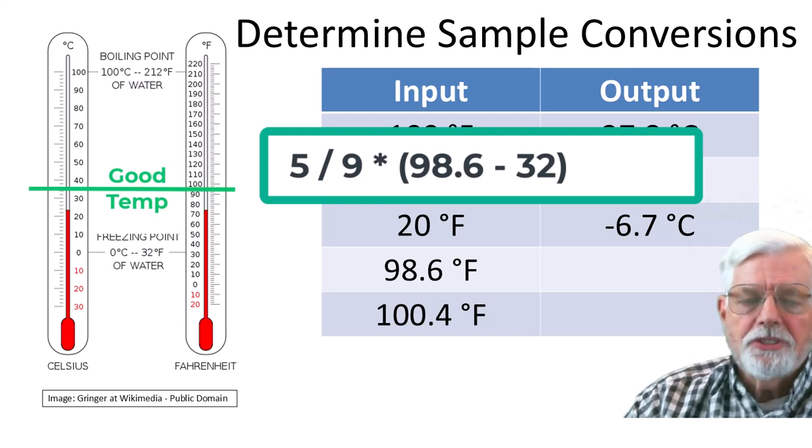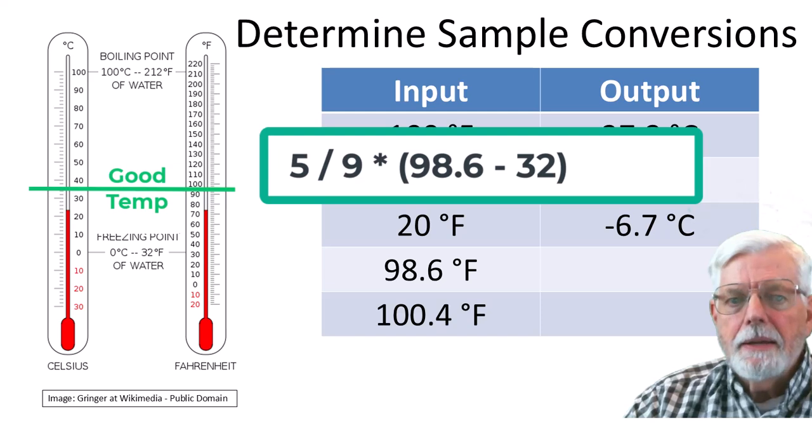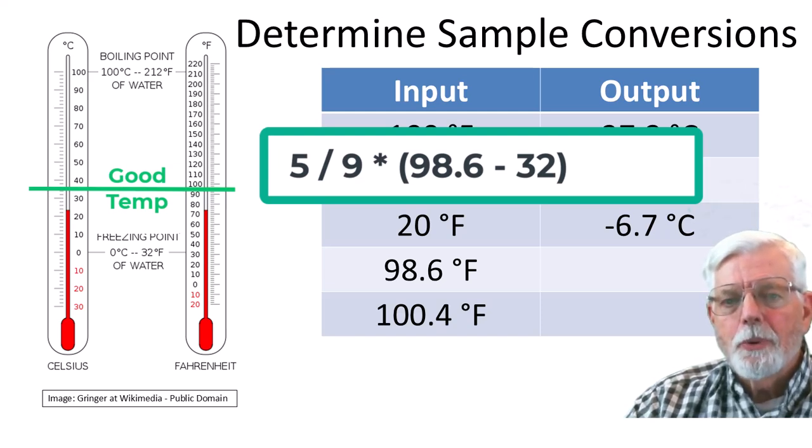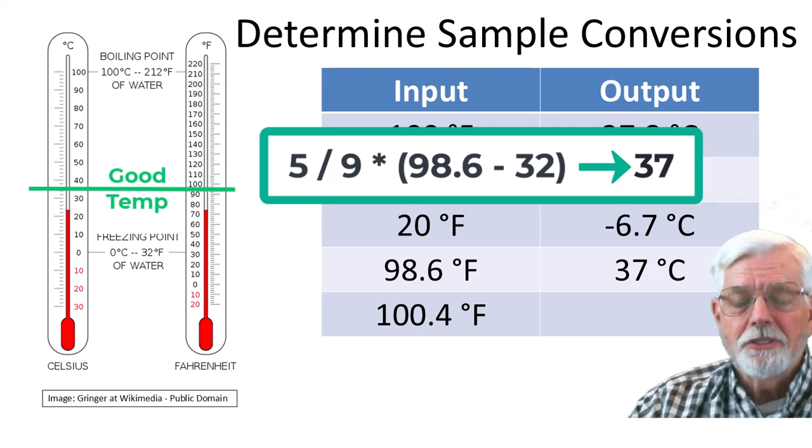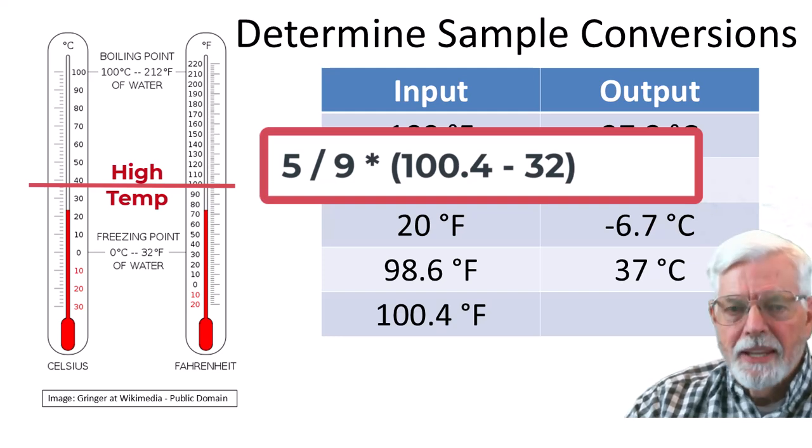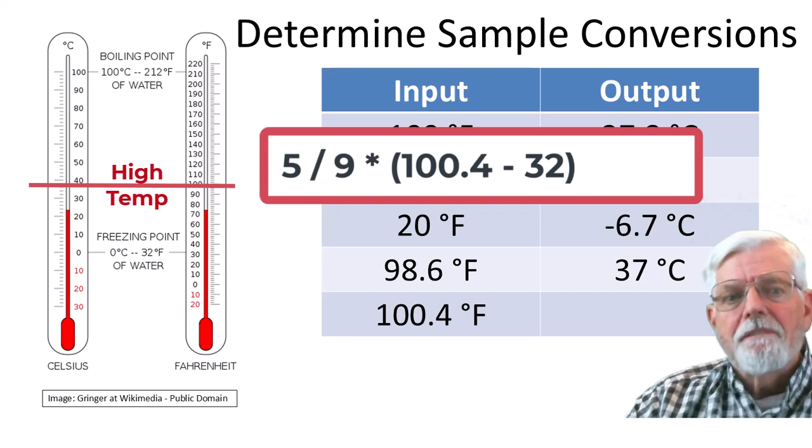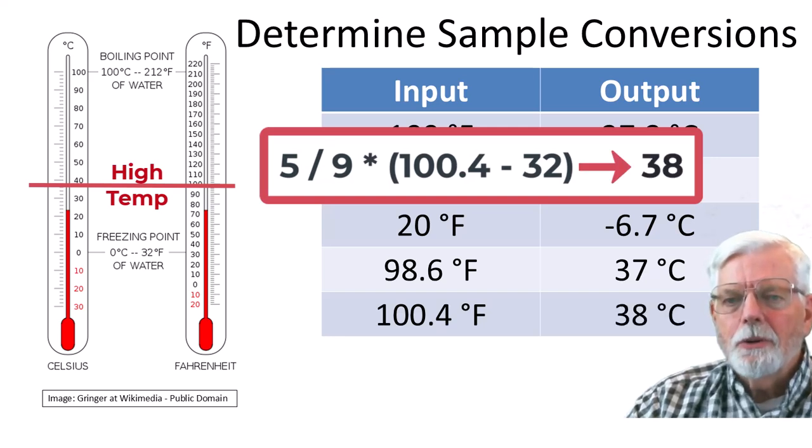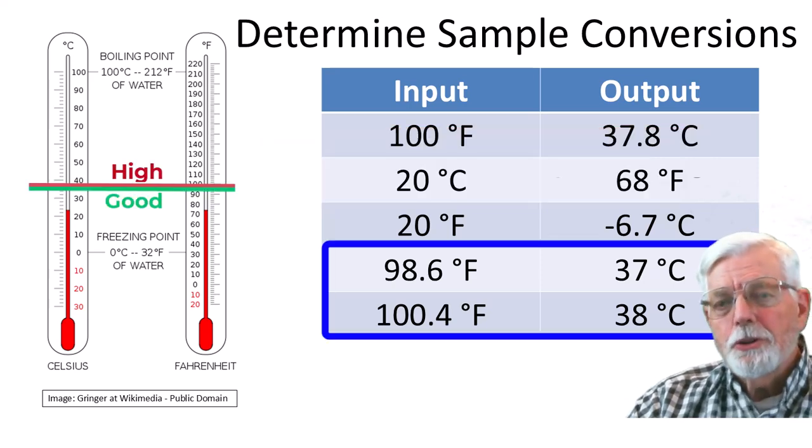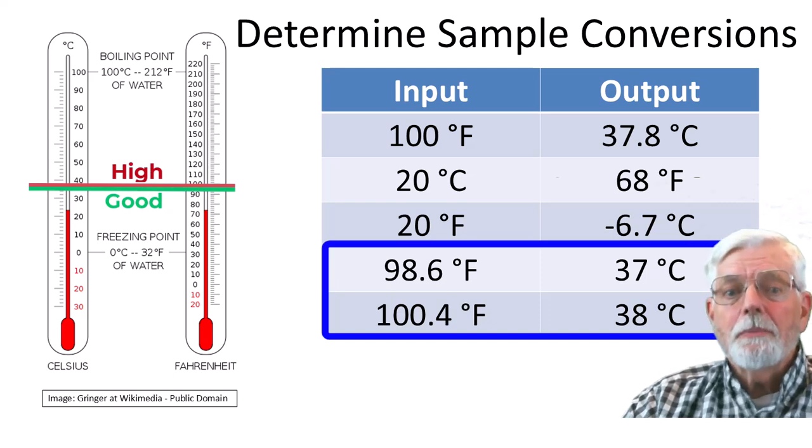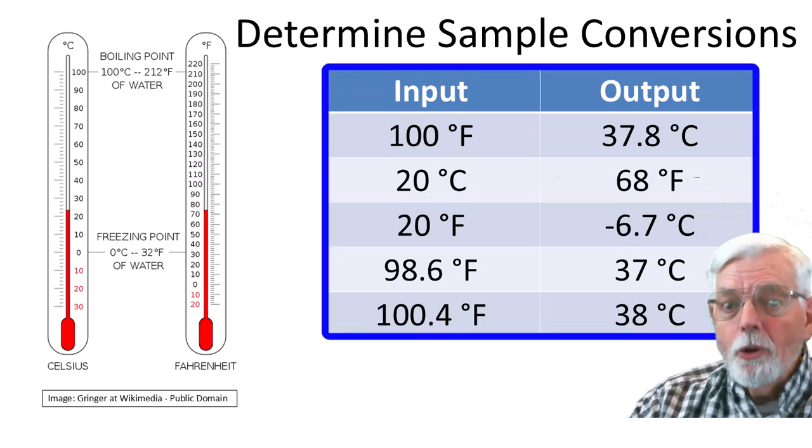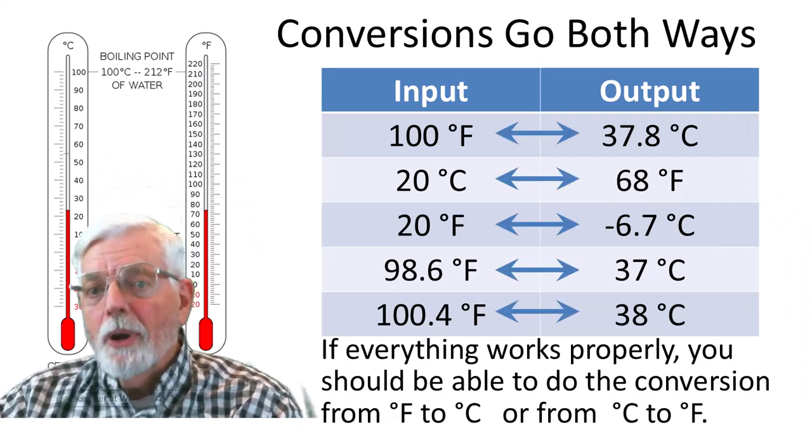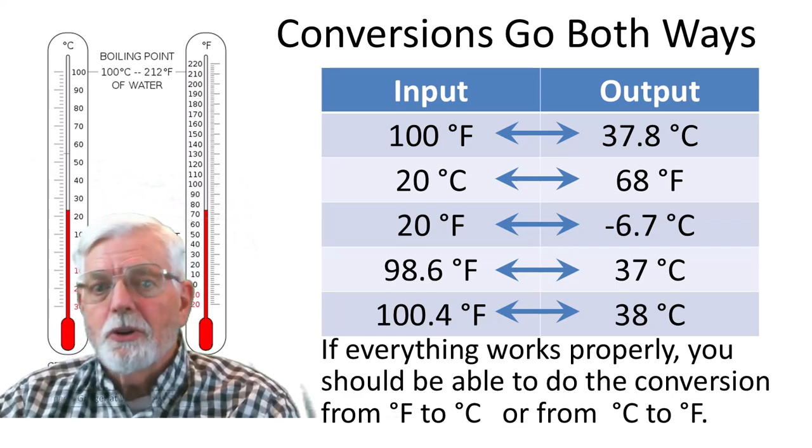Let's try some other conversions. Change 98.6 degrees Fahrenheit into Celsius. 5 divided by 9 times open parentheses 98.6 minus 32 close parentheses is exactly 37 degrees Celsius. 100.4 degrees Fahrenheit is the beginning of a high temperature. It looks like the medical field just used temperature of 37 degrees Celsius for normal and 38 degrees Celsius for a high temperature and then converted them to Fahrenheit for us Americans to use. I am going to save the results in a table to verify correct operation of the program when the formulas are converted into code.